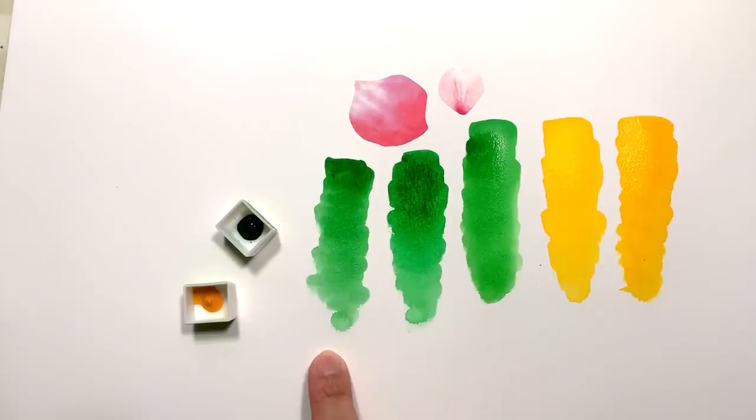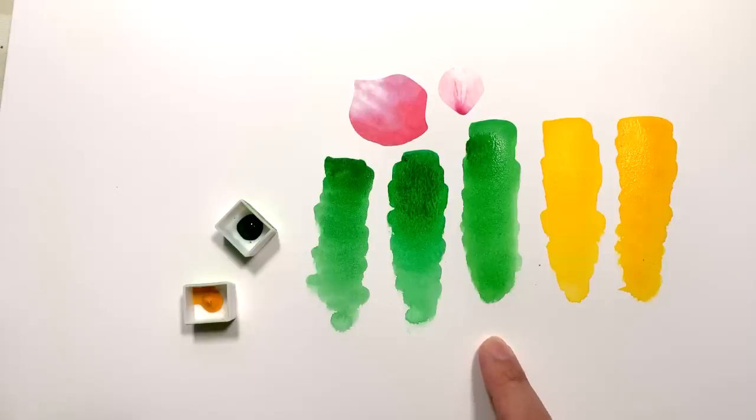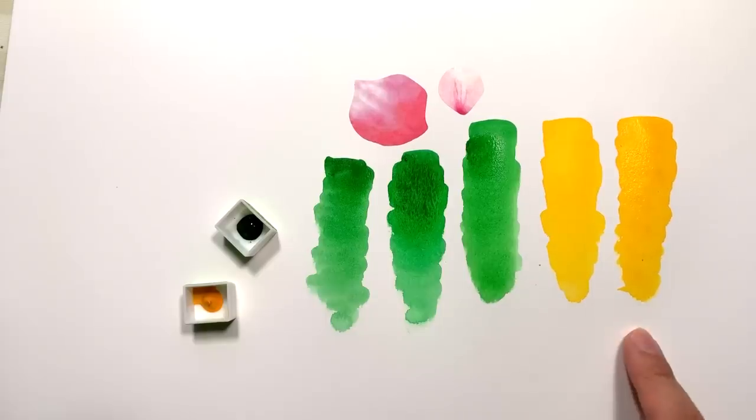I would say that the Sennelier one is the most muted out of the three with Holbein being maybe a little bit too bright. And then the Daniel Smith's old recipe is like a nice middle. I would say that in terms of the new gamboge, I have to say they did a great job in matching. I would maybe say that the new new gamboge is slightly orangier.